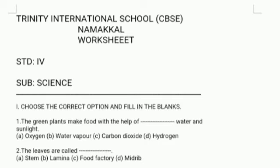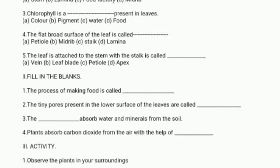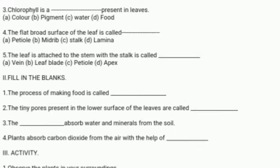Now, I am going to read the answers for the worksheet. Choose the correct answer. 1. The green plants make food with the help of — Answer: CO2, carbon dioxide. 2. The leaves are called — Answer: food factory. 3. Chlorophyll is the — present in leaves. Answer: pigment. 4. The flat, broad surface of the leaf is called leaf lamina. 5. The leaf is attached to the stem with a stalk called — Answer: petiole.